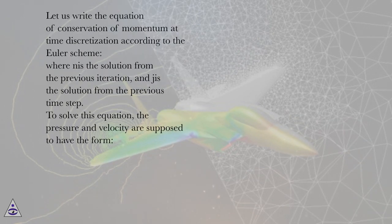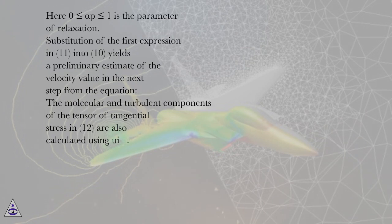Let us write the equation of conservation of momentum at time discretization according to the Euler scheme. We're n is the solution from the previous iteration, and j is the solution from the previous time step. To solve this equation, the pressure and velocity are supposed to have the form, where 0 ≤ alpha_p ≤ 1 is the parameter of relaxation. Substitution of the first expression in equation 11 into equation 10 yields a preliminary estimate of the velocity value in the next step from the equation.